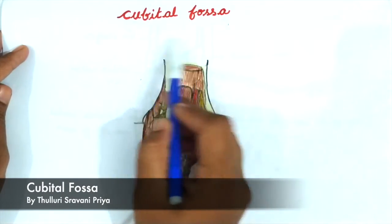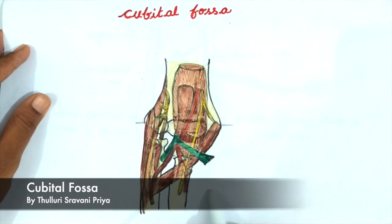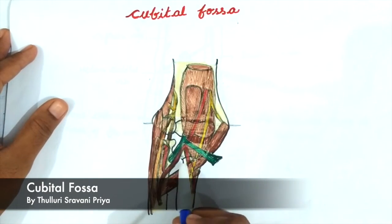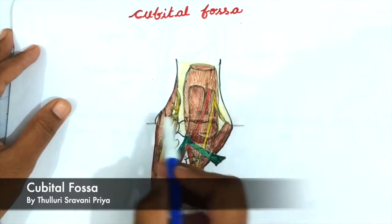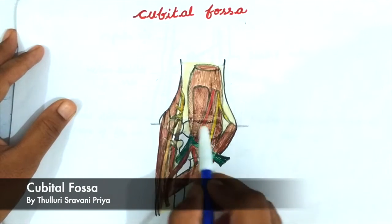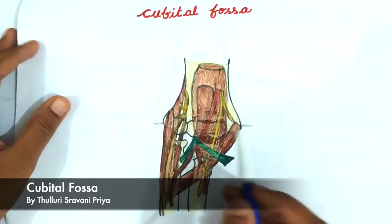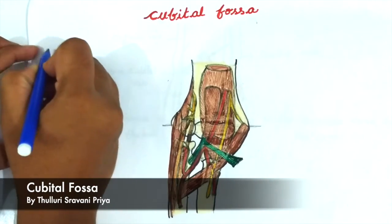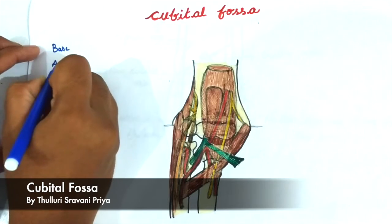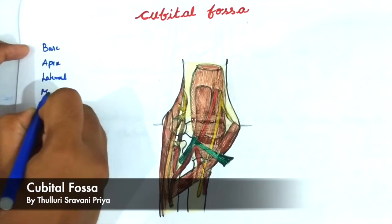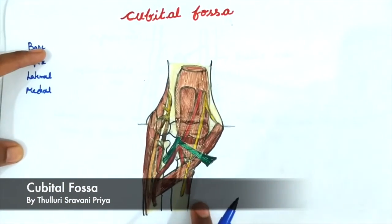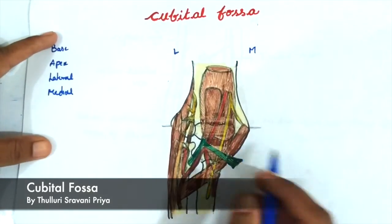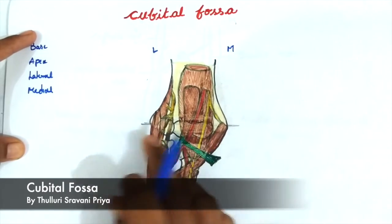Today our topic is the cubital fossa. This is a triangular hollow-shaped fossa which is located in front of the elbow joint. Looking at the boundaries of the cubital fossa, there is the base, apex, lateral boundary, and medial boundary. This is the right hand diagram, with this being the lateral side and this being the medial side.